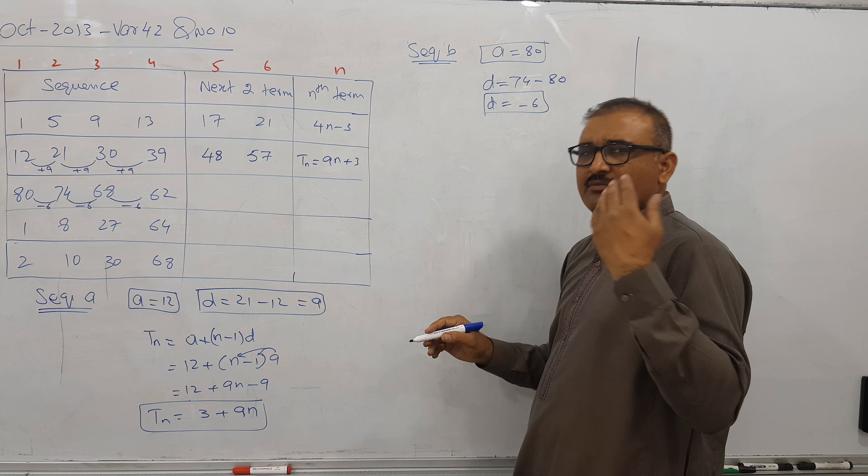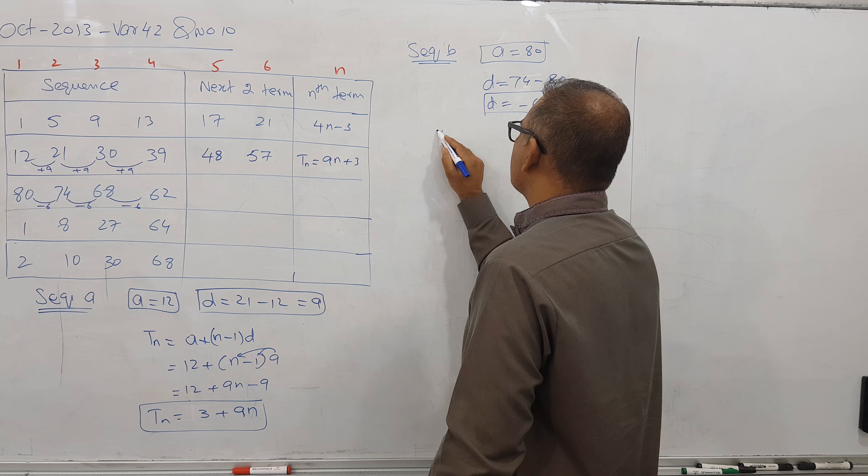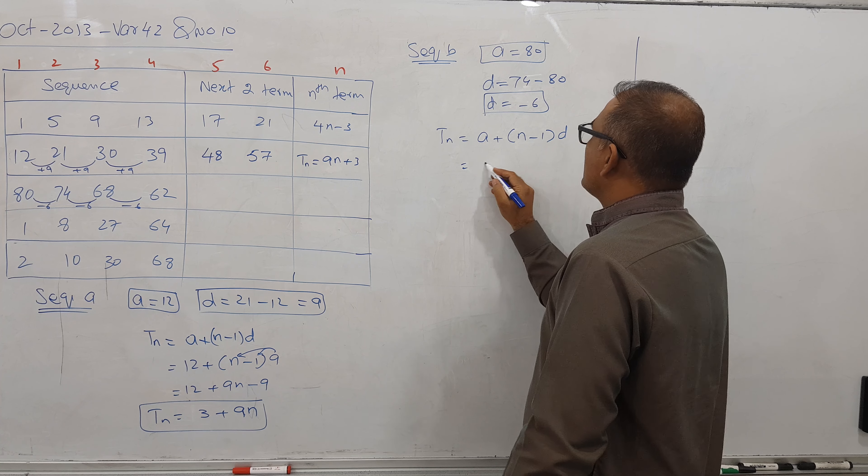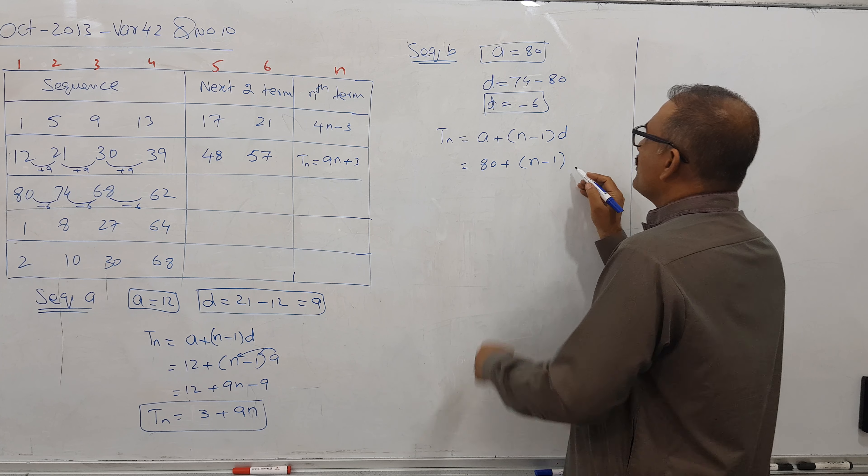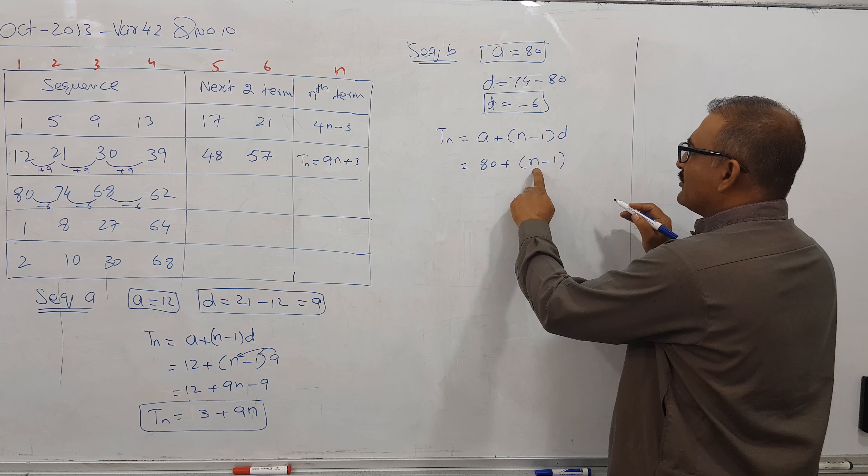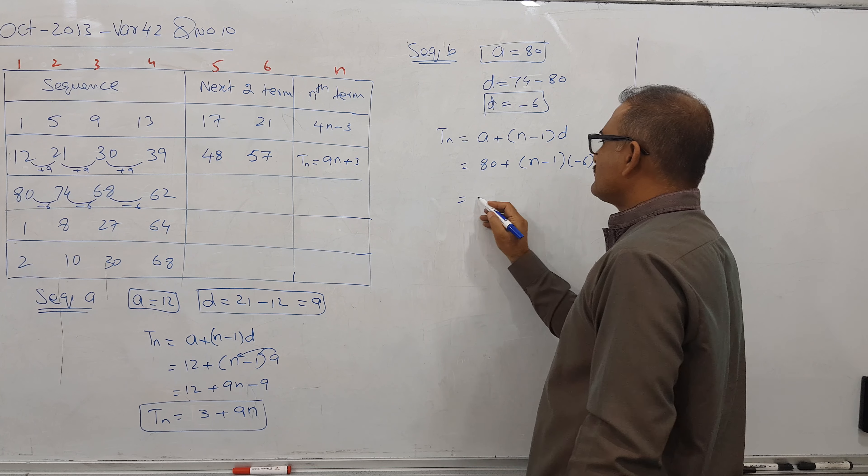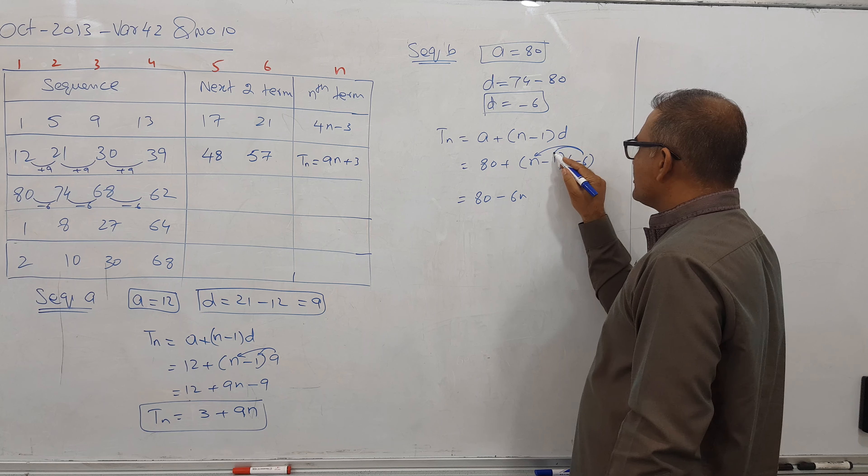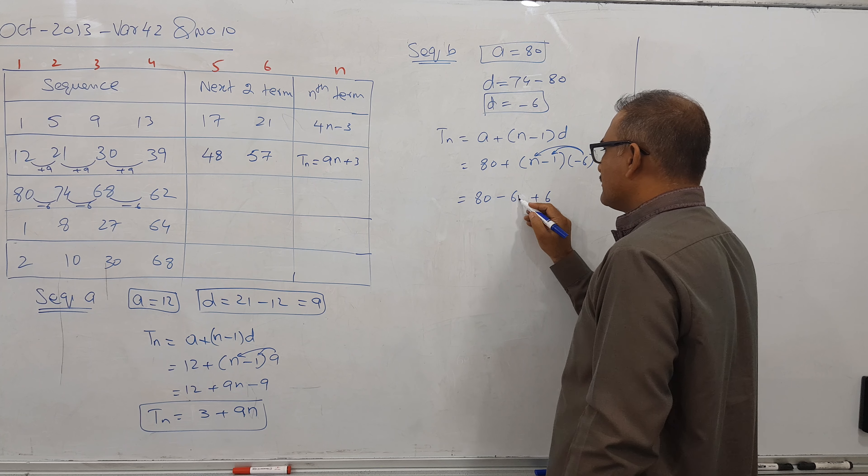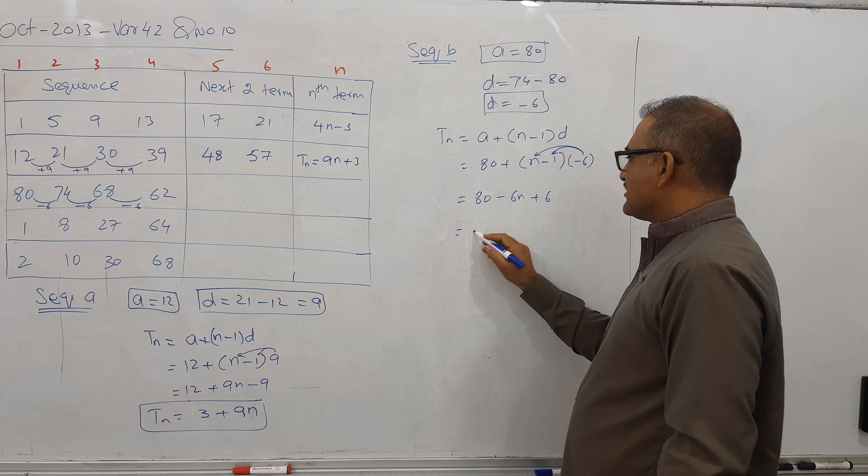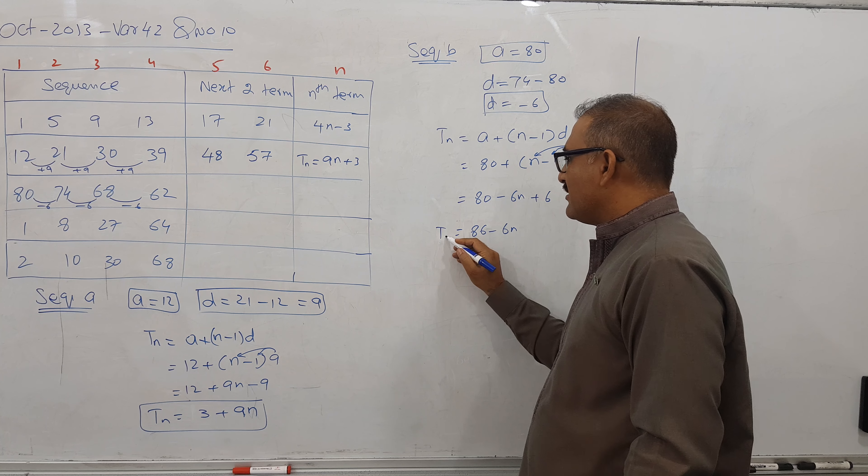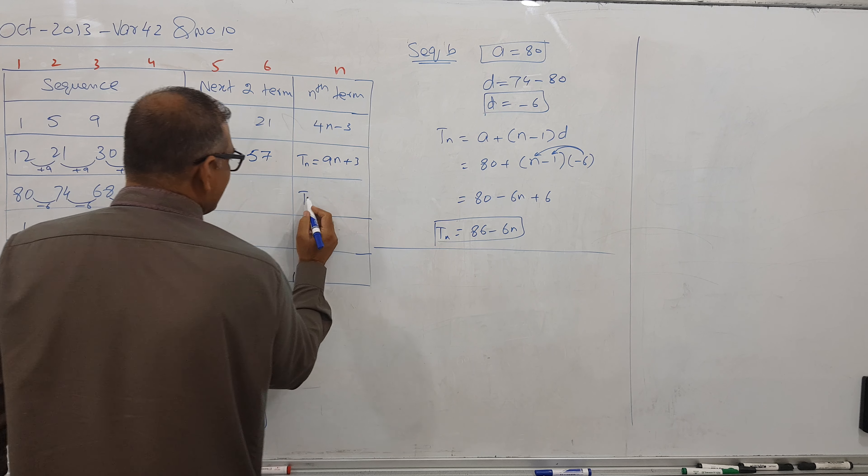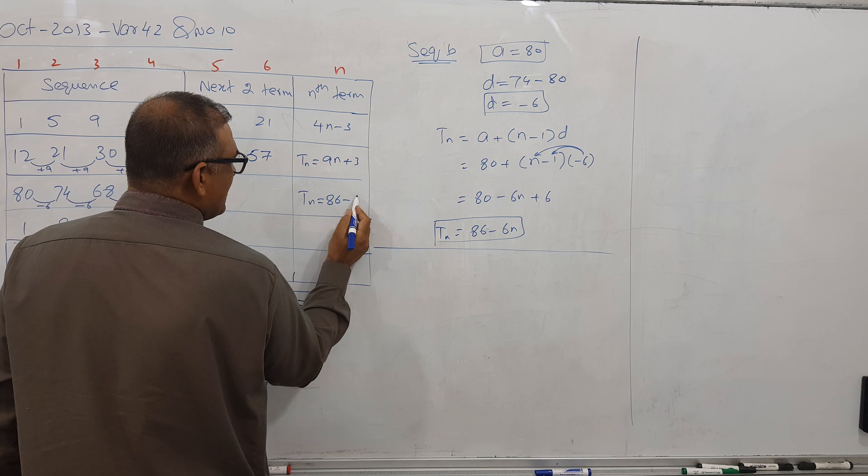Because common difference is arithmetic progression, so formula is Tn is equal to a plus n minus 1 times d. First term is 80, common difference is minus 6. Minus 6 into n you got minus 6n and minus into minus is plus 6. 80 plus 6 I got 86 minus 6n. This is my nth term value. So nth term value is 86 minus 6n.